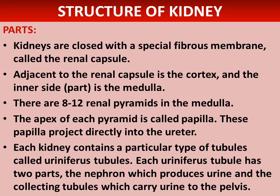The kidneys are enclosed with a special fibrous membrane called the renal capsule. Adjacent to the renal capsule is the cortex, and the inner side is the medulla. There are eight to twelve renal pyramids in the medulla. The apex of each pyramid is called the papilla, which projects directly into the ureter. Each kidney contains particular tubules called uriniferous tubules. Each uriniferous tubule has two parts: the nephron, which produces urine, and the collecting tubules, which carry urine to the pelvis.